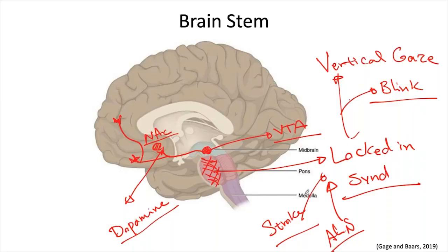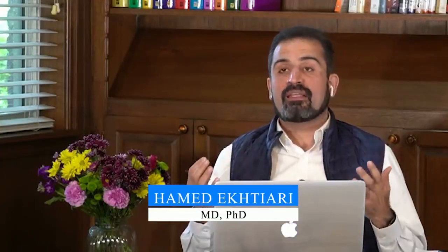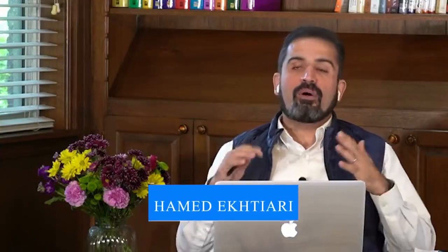The medulla controls breathing, eating, and sensations like nausea and vomiting — very basic vegetative states. If someone's medulla is destroyed, they cannot survive. Without the medulla, you cannot maintain even a vegetative state; technically, you would be dead.